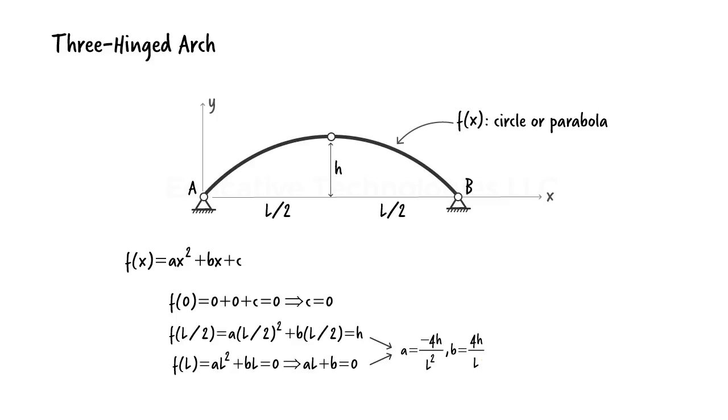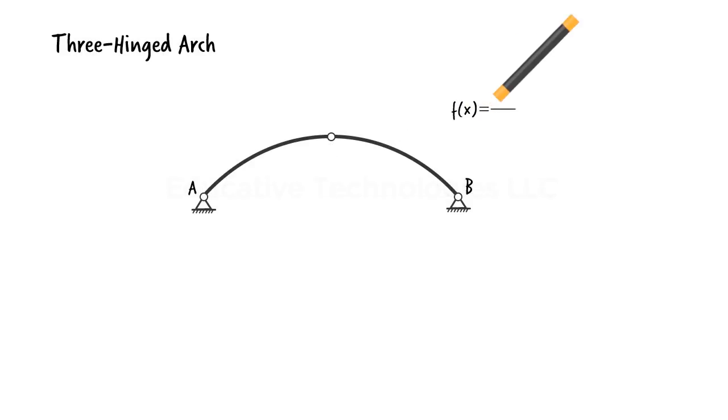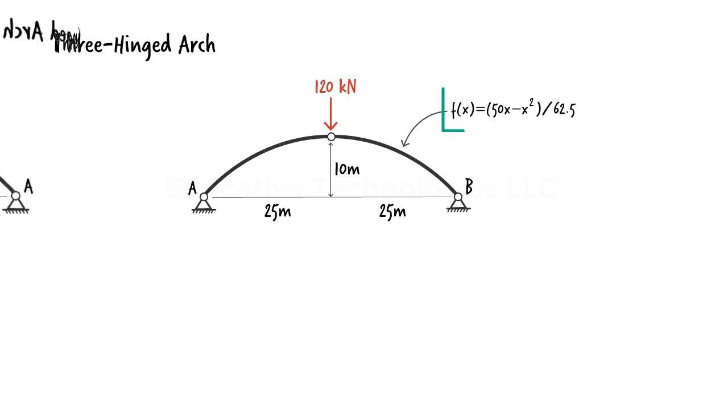So the shape of our arch can be described using this parabolic function. Suppose our arch has a height of 10 meters and spans 50 meters. We wish to analyze it under a concentrated load of 120 kilonewtons placed at its crown. Knowing h and l, we can rewrite f(x) like this.